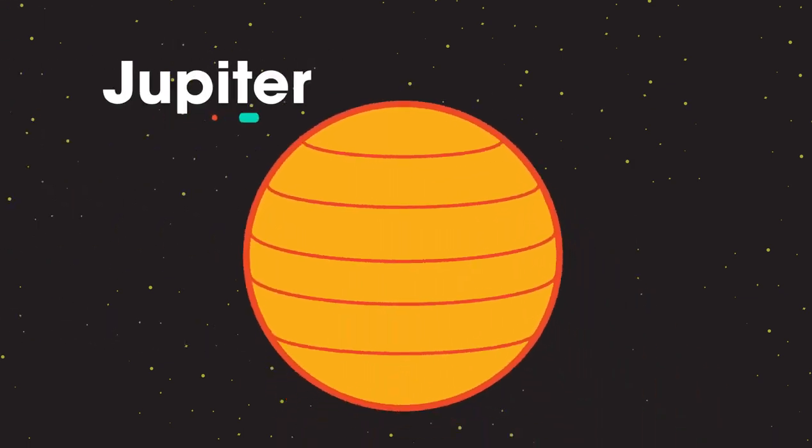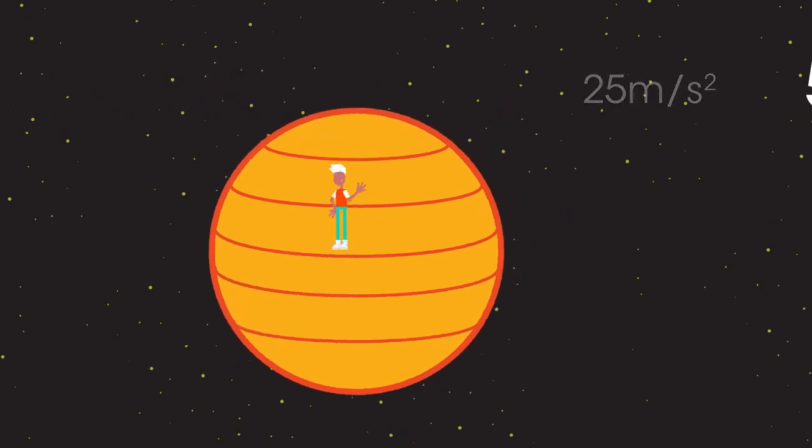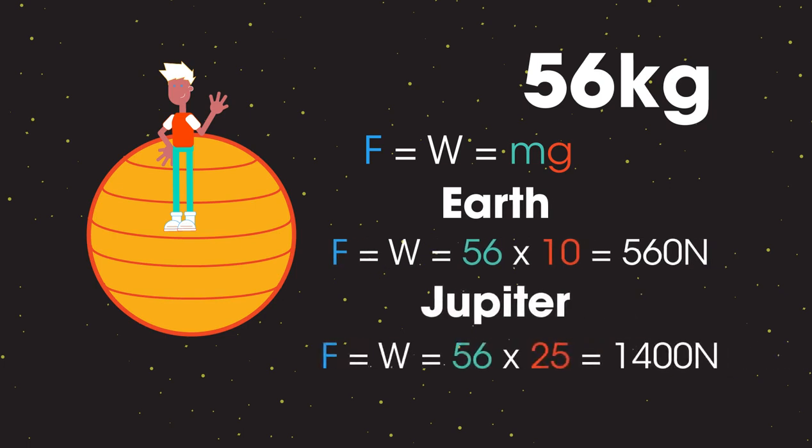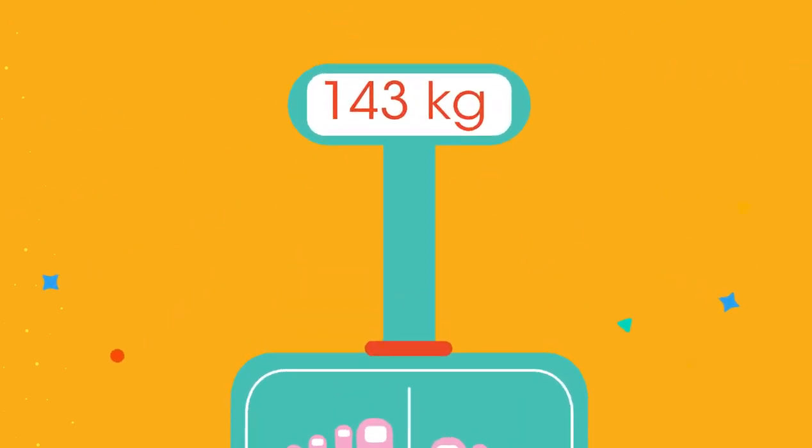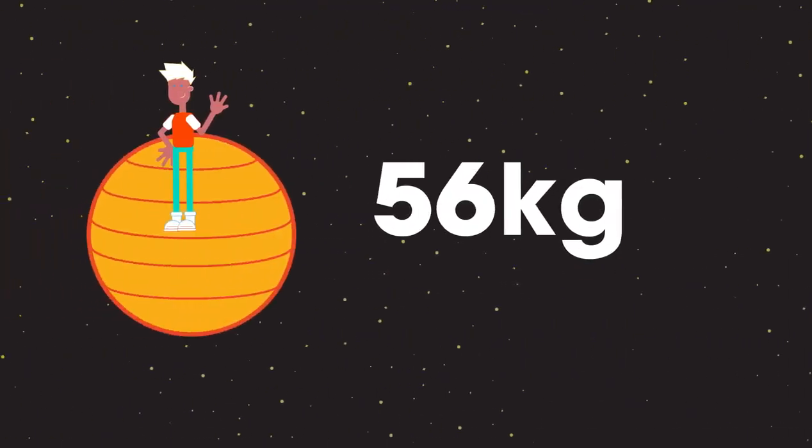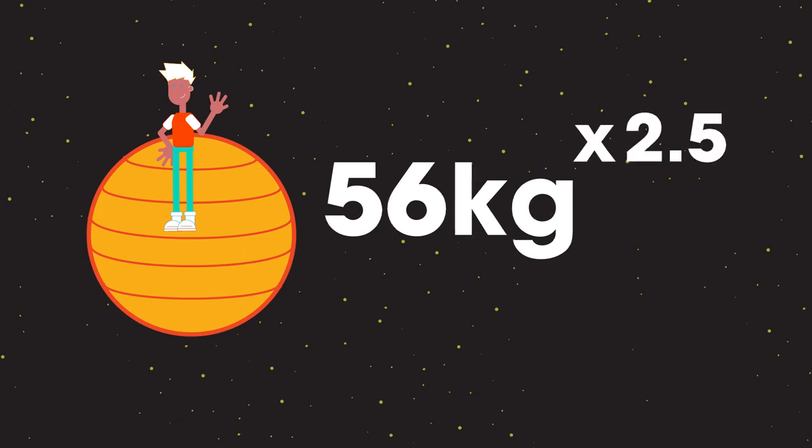My weight on Jupiter, if there was a solid surface to stand on, would be 1400 newtons. And bathroom scales, which are calibrated in kilograms, would show I had a mass of 143 kilograms. You would feel very heavy, yet your mass would still be 56 kilograms. Just your weight would be two and a half times more than on Earth.